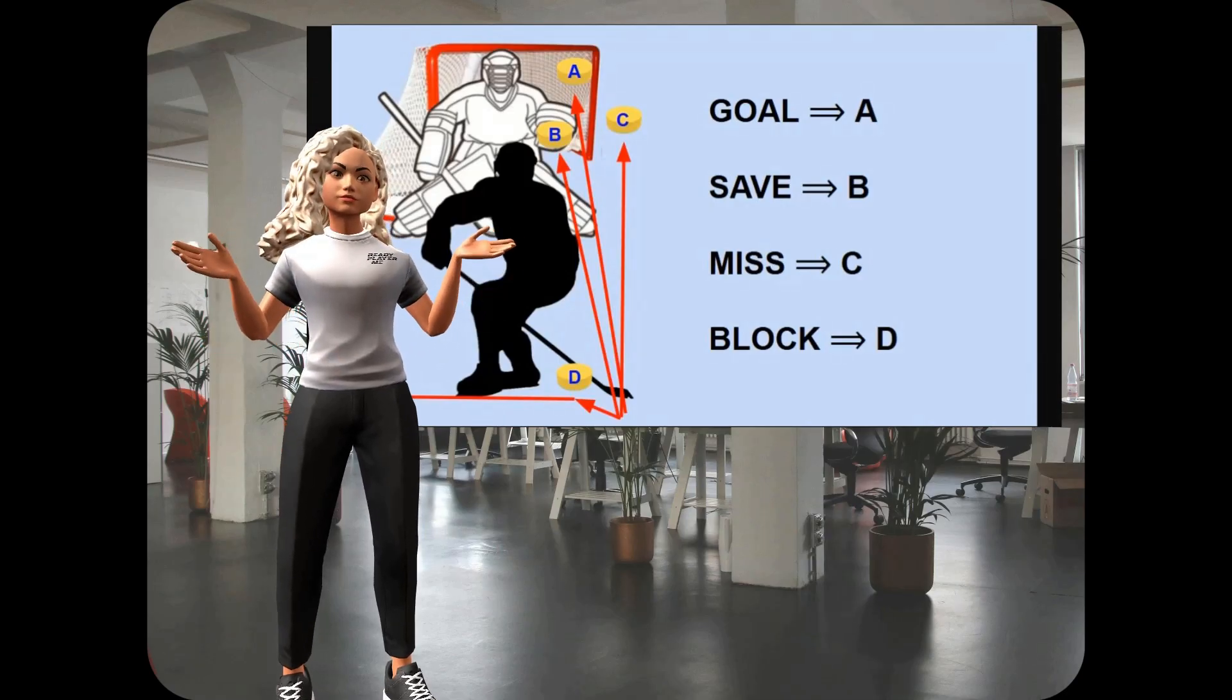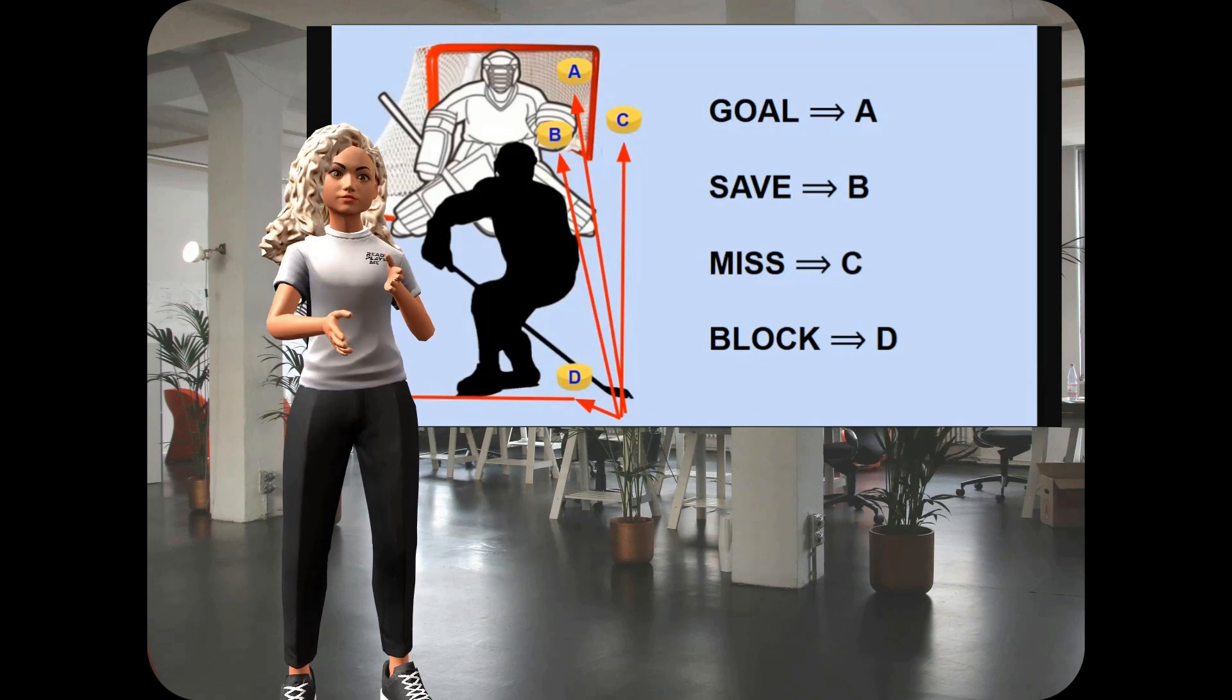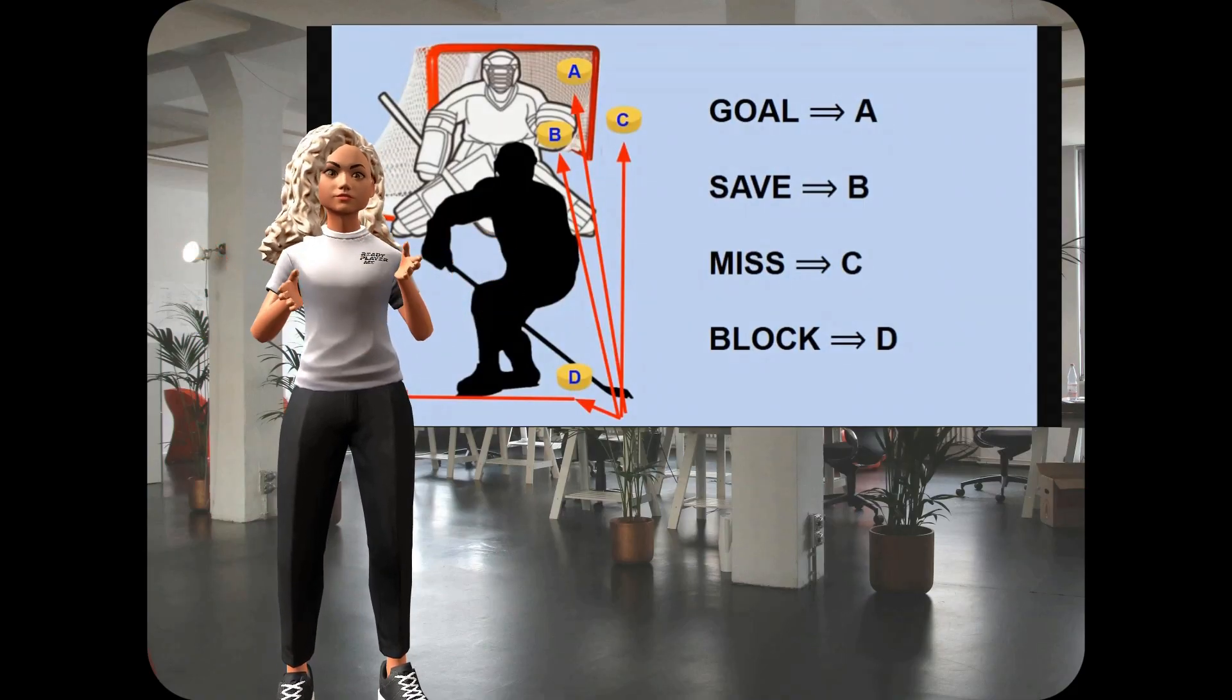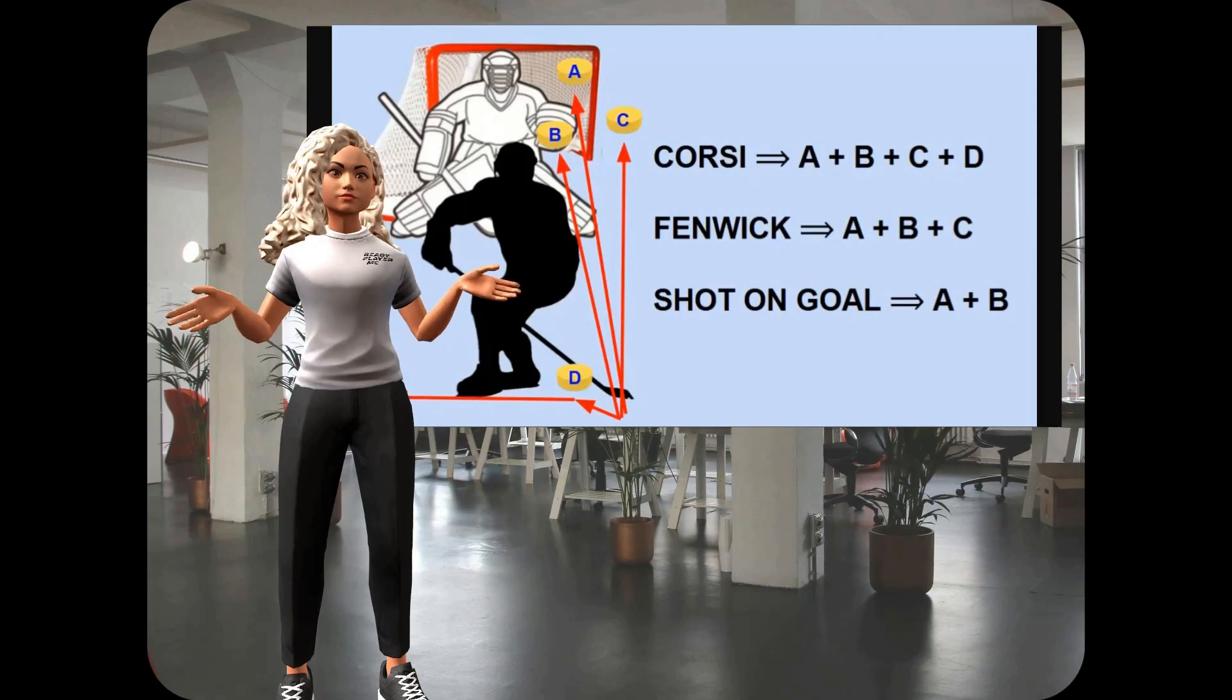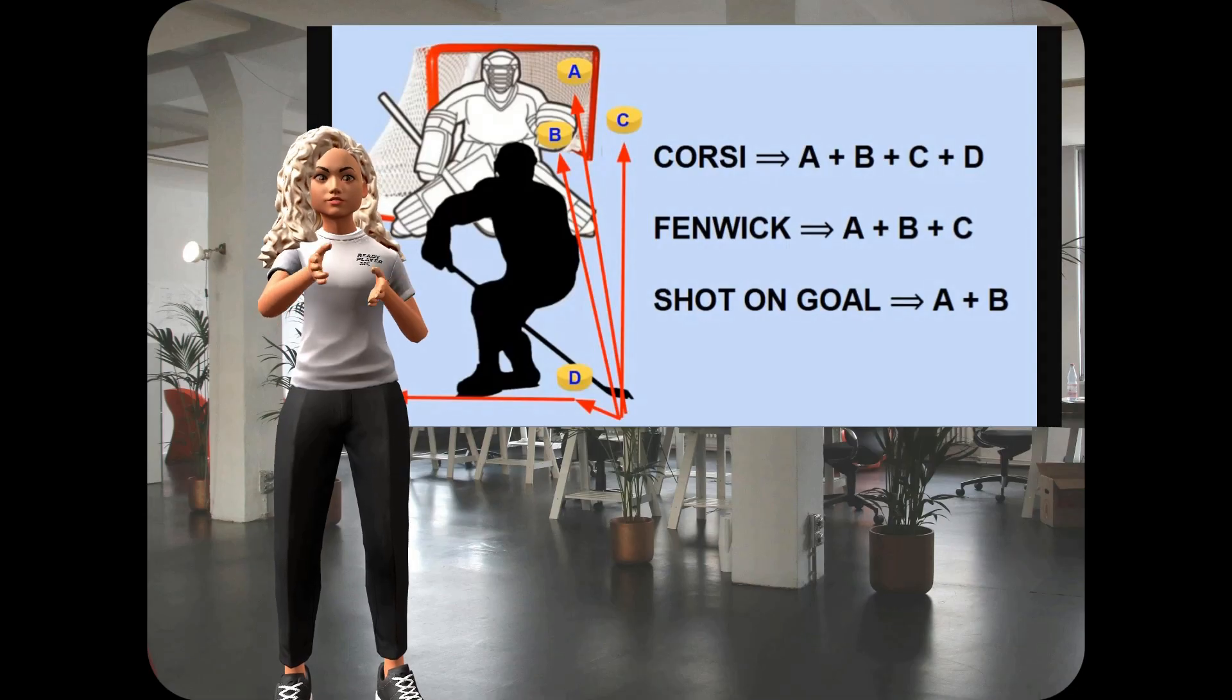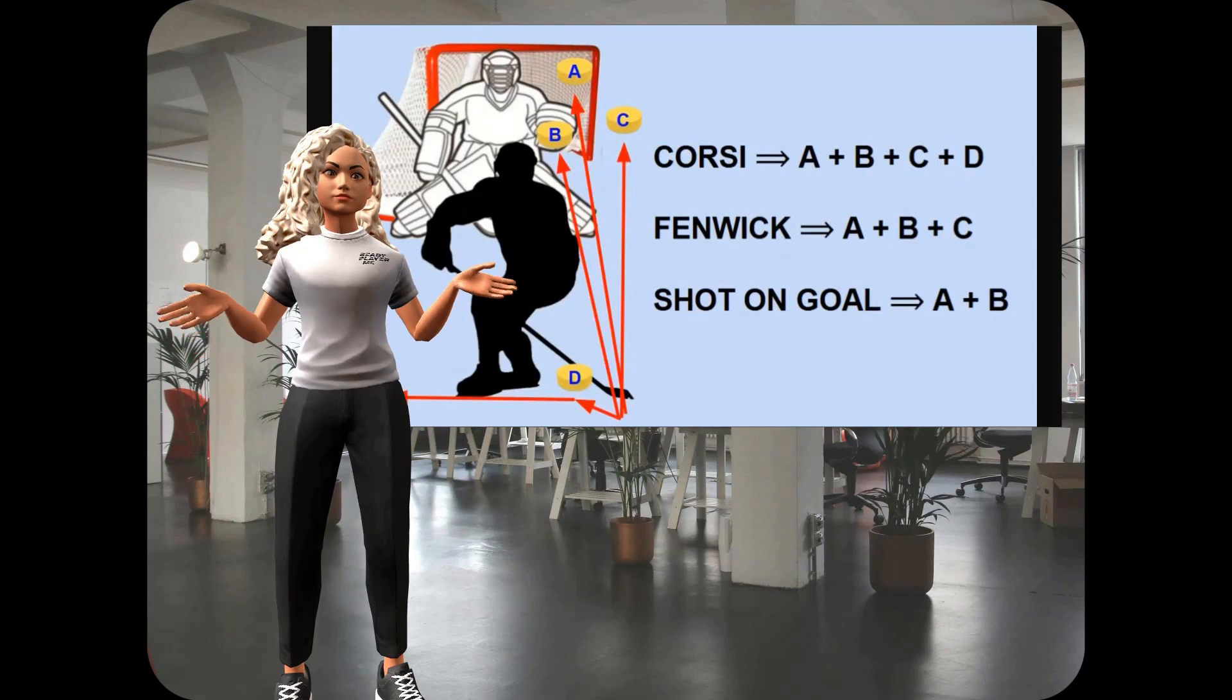So, when we get into different types of shot metrics, it takes into account a combination of these types of shots. If you hear any analytics person say or write something about Corsi, Corsi is the name for the combination of all shots attempted during the course of a game. It's all goals, plus shots on goal, plus misses, plus block shots. That is what Corsi measures.